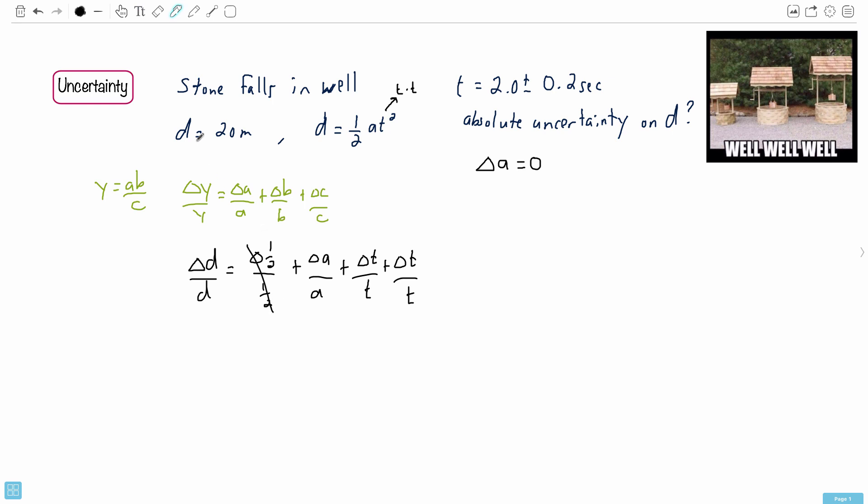There's no uncertainty on one-half, so that goes away. They told us that delta A was essentially zero, so that makes it easier. And can you see then, if you want to get delta D - we've got delta D over D equals, in this case, 2 delta T over T, because we're adding them twice.